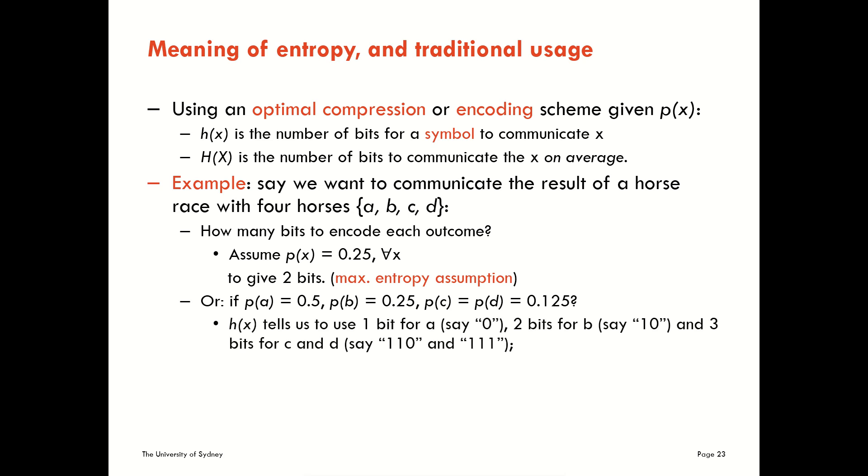If we use the Shannon information content here, it gives us different answers. It tells us that the most efficient coding scheme will use one bit for A now, maybe a 0, two bits for B, say a 1, 0, and three bits each for C and D, say 1, 1, 0, and 1, 1, 1. This is obviously very different to using two bits for each of the outcomes, and it's different specifically because the probability distribution function is different here. With a different probability distribution function, there is a more efficient coding scheme to use than two bits for each outcome.